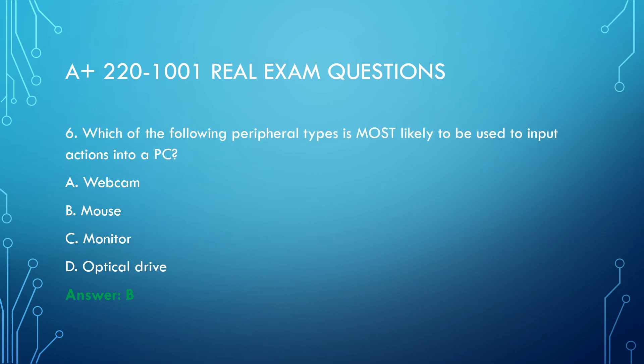Question 6. A technician is installing the latest OS on a user's system. The user wants all of the settings and files to remain intact during the installation. Which of the following upgrade methods should the technician use? A. Network installation. B. Clean install. C. In-place upgrade. D. Image deployment. Answer: C.